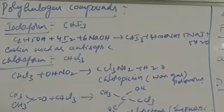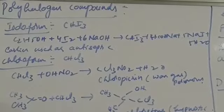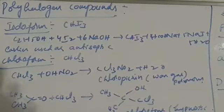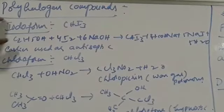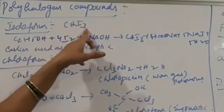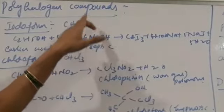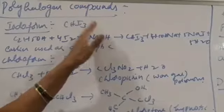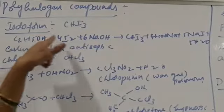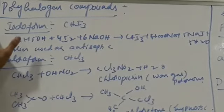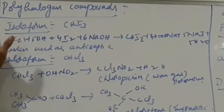Next, polyhalogen compounds — alkyl halides having more than one halogen atom. Coming to the first one: iodoform. Its formula is CHI3, having 3 iodine atoms. This polyhalogen compound is prepared from alcohol by the action of iodine in the presence of alkali. Earlier, iodoform was used as an antiseptic.